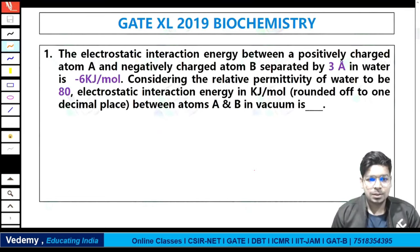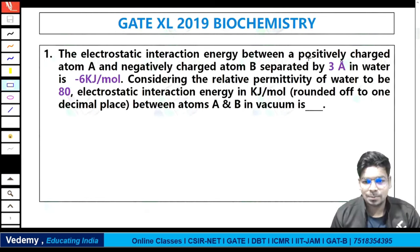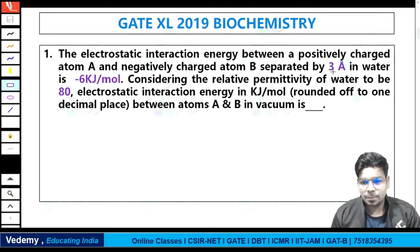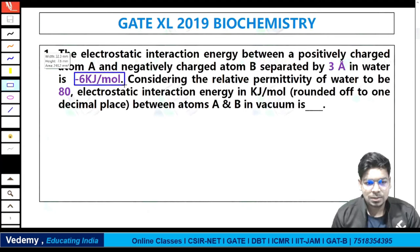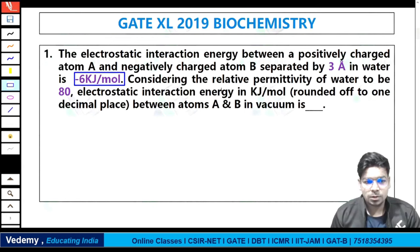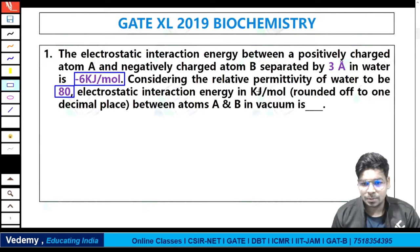The first GATE Excel 2019 biochemistry question: the electrostatic interaction energy between a positively charged atom A and negatively charged atom B, separated by three angstroms in water, is minus six kilojoule per mole, considering the relative permittivity of water to be 80. What is the electrostatic interaction energy in kilojoule per mole between A and B in vacuum?